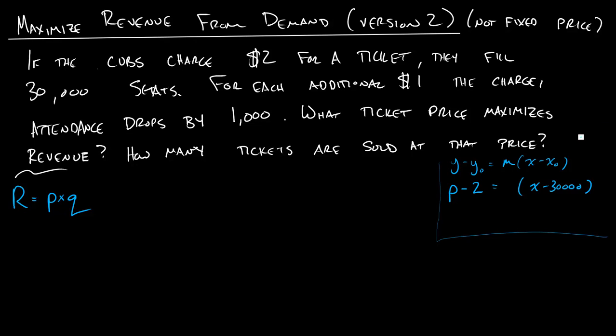So remember that the slope is defined as difference in output, so difference in Y, or in this case P, over difference in input. So usually X, but in this case Q. So we know that what this is telling us is that a difference of $1 in charge is going to result in a 1,000 attendance drop.